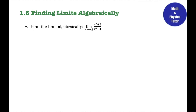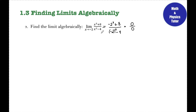Number 2: the limit as x approaches negative 2 of (x³ + 8) over (x² − 4). The first thing I'm going to do is plug negative 2 in for x. So I have (−2)³ + 8 over (−2)² − 4. In the numerator this is negative 8 plus 8, so that's 0. In the denominator I have 4 minus 4, so that's also 0. This is an indeterminate form — I have to do more math to get things to cancel out.